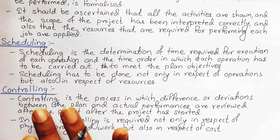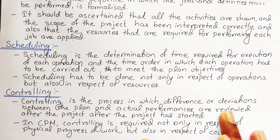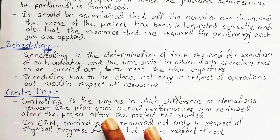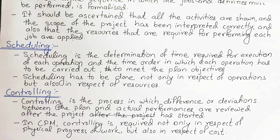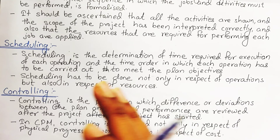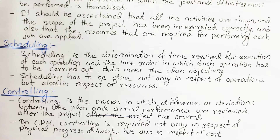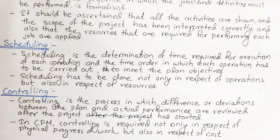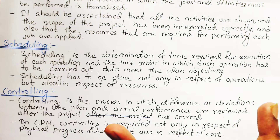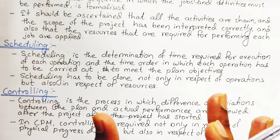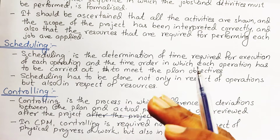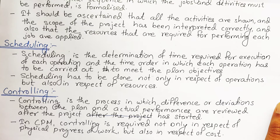The final step is controlling. Controlling is the process in which differences or deviations between the plan and actual performance are reviewed after the project has started. In CPM, controlling is required not only in respect of the physical progress of the work but also in respect of cost — since CPM is fundamentally about cost and time — so that the project does not exceed the contracted amount.